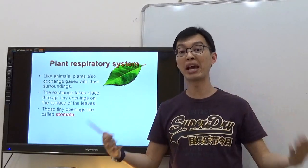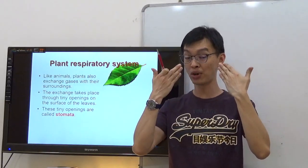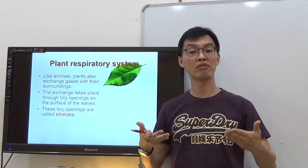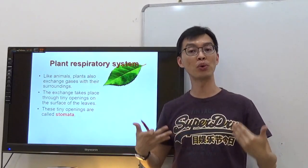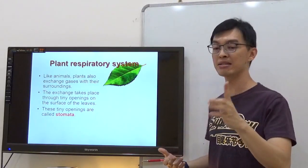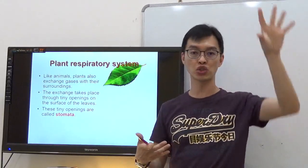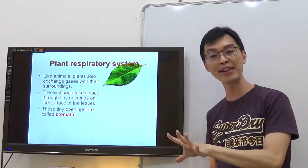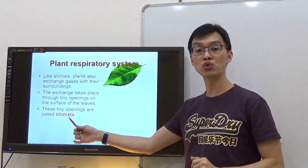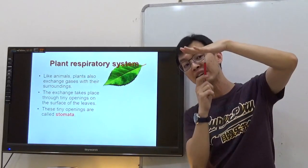For us, we have nostrils. We can breathe in through our nostrils, and then it will fill our lungs with oxygen. But for plants, it's a different story. You don't see any nostril sticking out from any part of the plant. So they do have stomata that is found on the underside of the leaves.